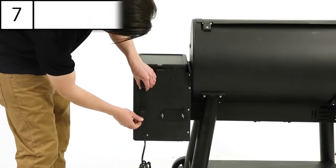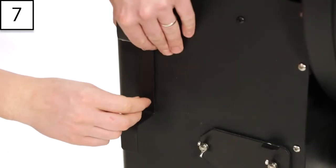Step 7. Install the metal bracket on the back of the pellet box assembly that will later be used to coil your electrical cord.